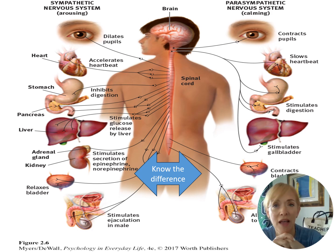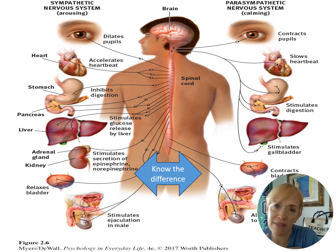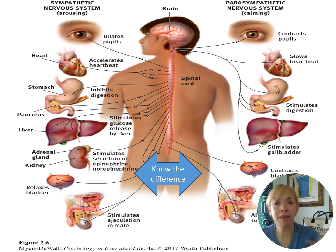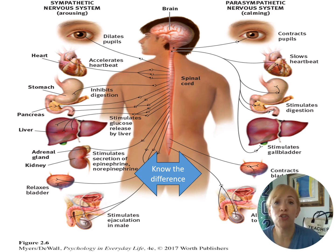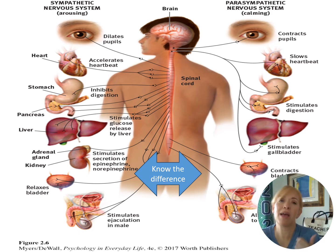In fight-or-flight, your pupils dilate, blood is allocated to the muscles so you can run faster, fight harder, and lift heavy things. Digestion simply stops during fight-or-flight — all unnecessary functions that won't help save your life die down momentarily, until you return to parasympathetic mode where they pick back up again.